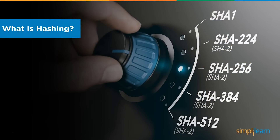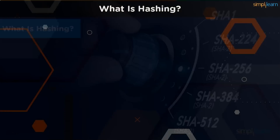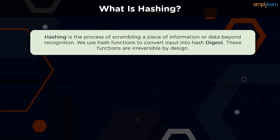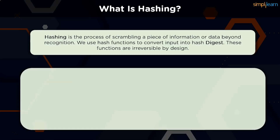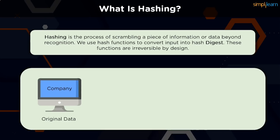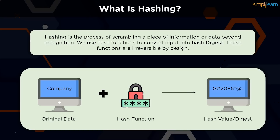Hashing is the process of scrambling a piece of information or data beyond recognition. We can achieve this using hash functions, which are essentially algorithms that perform mathematical operations on the main plaintext. The value generated after passing the plaintext information through the hash function is called the hash value, digest, or just hash of the original data.